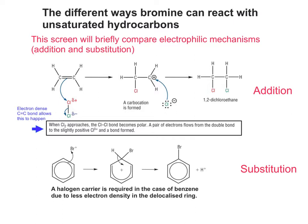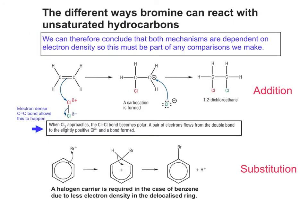We've got two different possibilities here. Both of them are dependent on, or sensitive to, electron density. So any comparisons we make in writing about the two mechanisms, or the ease with which the bromination or chlorination takes place, have to be based on electron density.